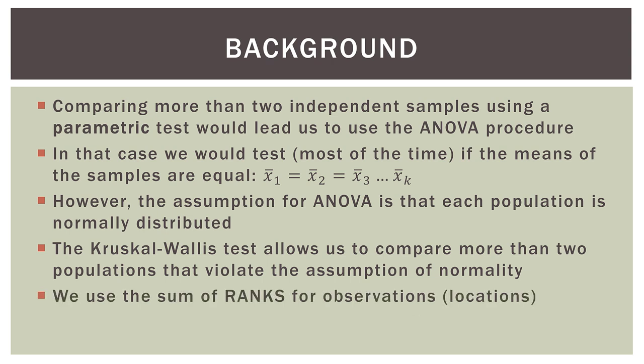The Kruskal-Wallis test allows us to compare more than two populations that violate the assumption of normality. That's why it's called a non-parametric test. So we use the sum of ranks for the observations — their locations relative to each other versus the actual observations themselves. This is a pattern in non-parametric statistics where we use the ranks: we sum the ranks, or we check the signs of the ranks, or both.